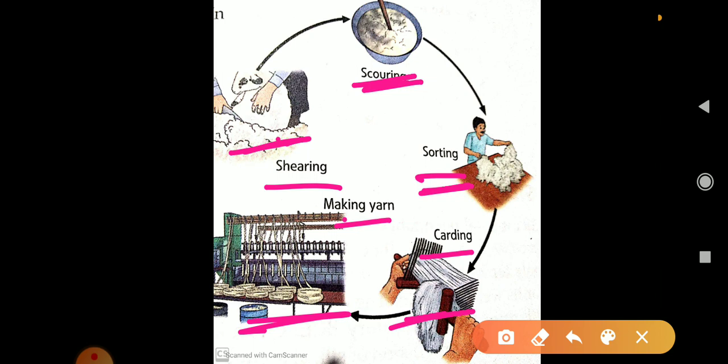Woolen yarn is woven or knitted into fabric which is then used to make finished products such as clothes, tablecloths, bags, etc.